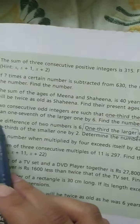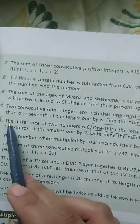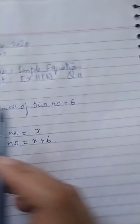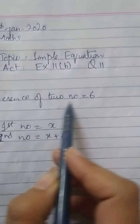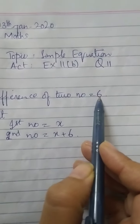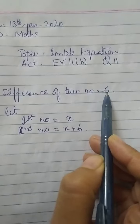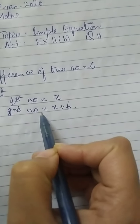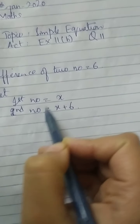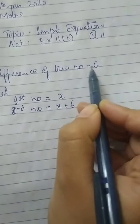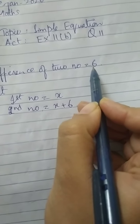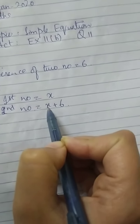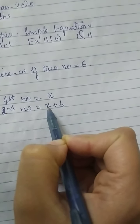The first statement of this question is: the difference between two numbers is 6. Two numbers ke darmiyaan difference kya hai? 6 hai. Let's suppose the first number is X. To doosra number kya hoga? Dono numbers ke darmiyaan mein 6 ka difference tha, to doosre number mein maine 6 plus kar liye hain.